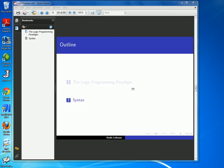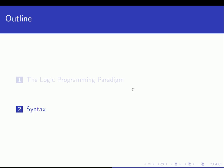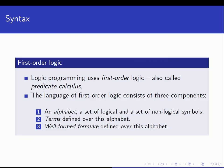What we want to do now is talk about the syntax that logic programming languages are based on. Logic programming uses a special kind of logic called first-order logic, or often called predicate calculus. The language of first-order logic consists of three components: an alphabet, some terms defined over this alphabet, and some well-formed formulas defined over this alphabet.